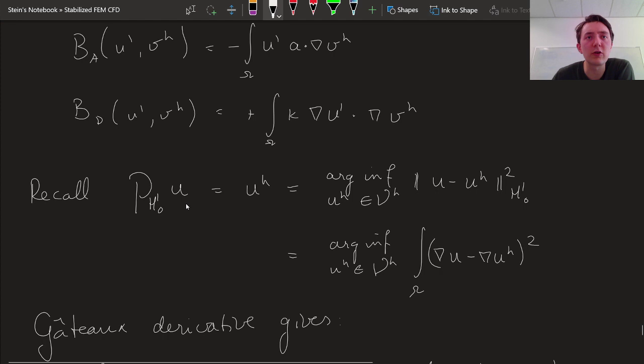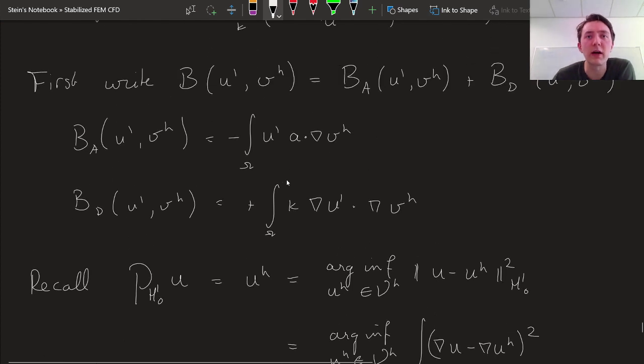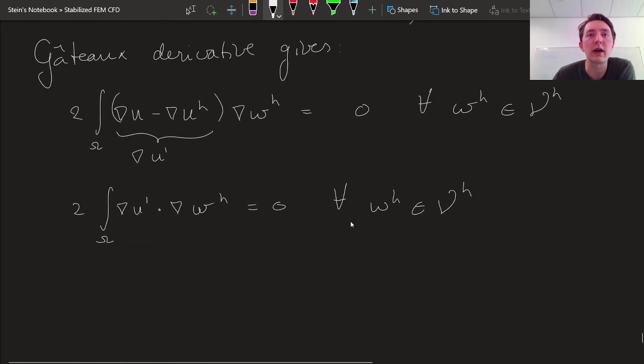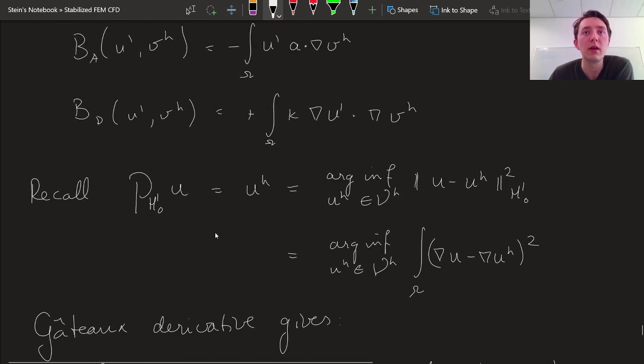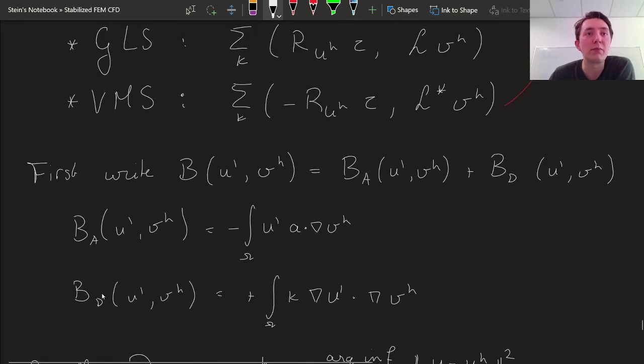That is precisely what the diffusive part of the bilinear form is doing. Look at that. The diffusive part of the bilinear form of the fine skills solution and the core skill test function is precisely the integral of the domain of the gradient of the fine skill dotted with the gradient of the core skill test function. And we said that, well, that one is exactly going to be 0 for any choice of core skill test function.